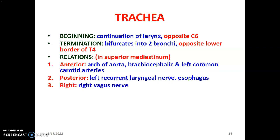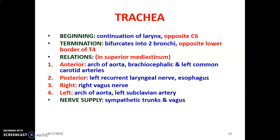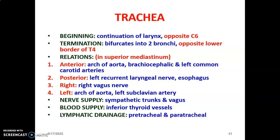To the right of the trachea in the superior mediastinum is the right vagus nerve, and to its left is the arc of the aorta and left subclavian artery. The nerve supply of the trachea comes from the sympathetic trunks and the vagus nerve, which provides parasympathetic innervation. The blood supply in the superior mediastinum is by the inferior thyroid vessels, which come from the thyrocervical trunk from the first part of the subclavian artery. The lymphatic drainage is by pretracheal and paratracheal lymph nodes.